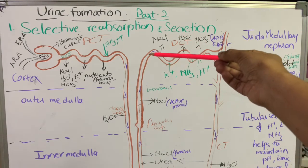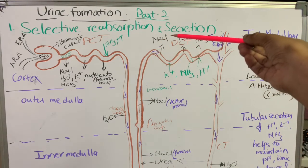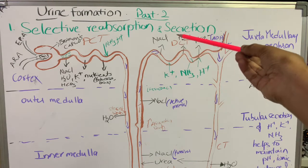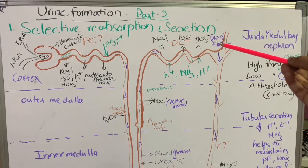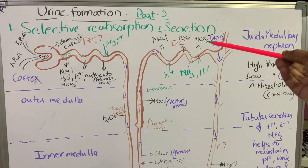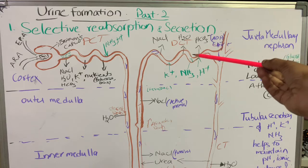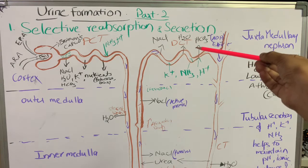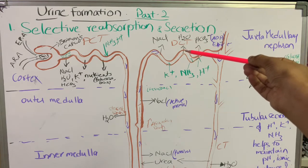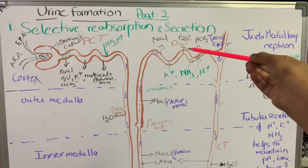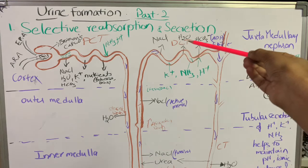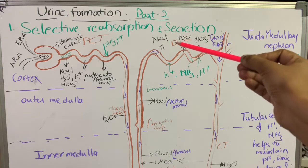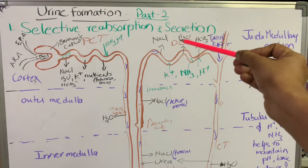Due to this nature, as the filtrate moves upwards toward the distal convoluted tubule, its concentration gradually decreases. In the distal convoluted tubule, the tubular cells are cuboidal but smaller than those in the PCT, and the brush border is absent.